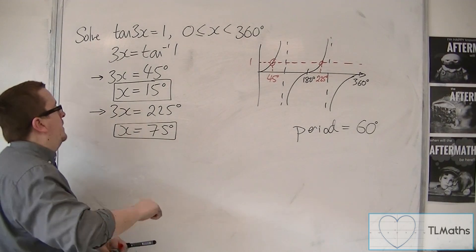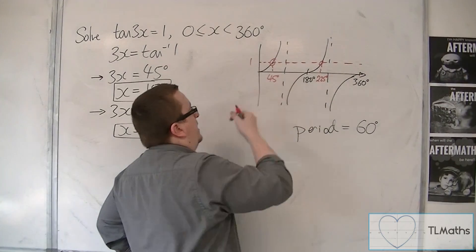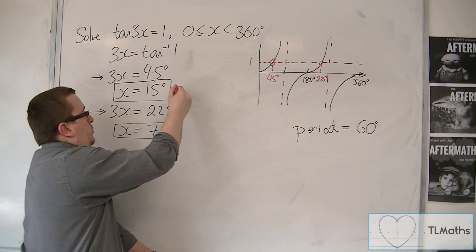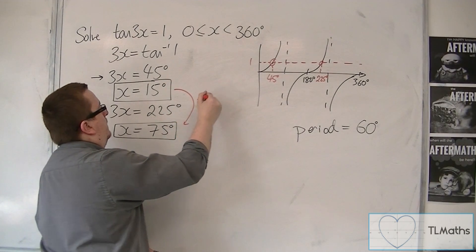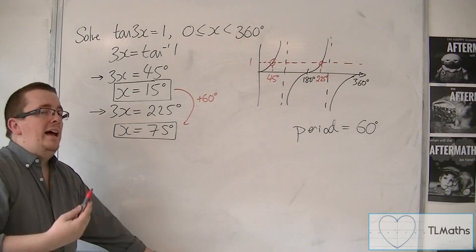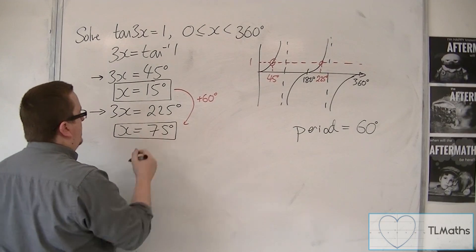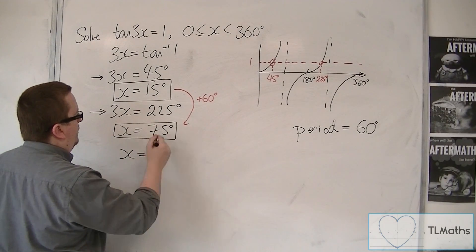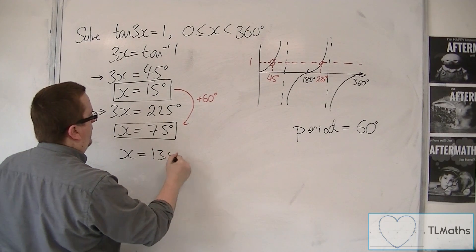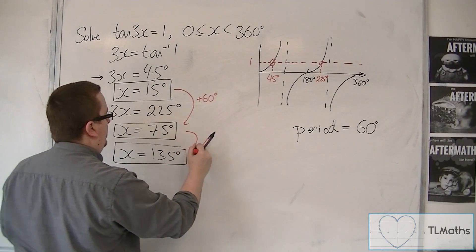Now the thing is, because tan repeats itself like so, actually adding 60 degrees to this one just gets me the 75 degrees. So that hasn't found me another solution. But I can keep adding 60 degrees to this one. So 75 degrees plus 60 is 135. That is another solution.